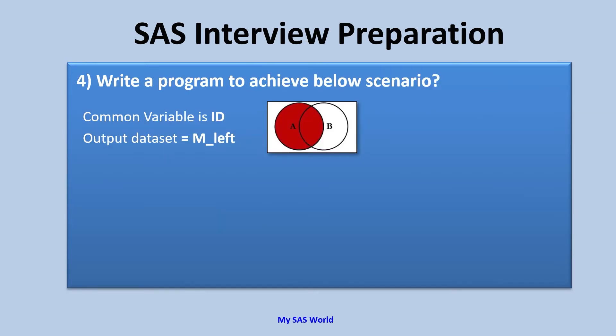Next question: write a program to achieve the following scenario. We have two data sets, A and B. We want all observations from dataset A written to the output data set. We need to create one data set called m_left that has all observations from dataset A and all matching or common observations from dataset B. The common variable is ID. This is a left join. How do we achieve this using data step merge?